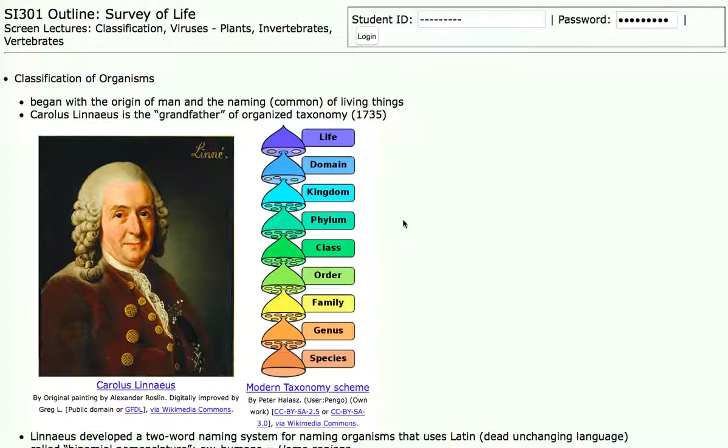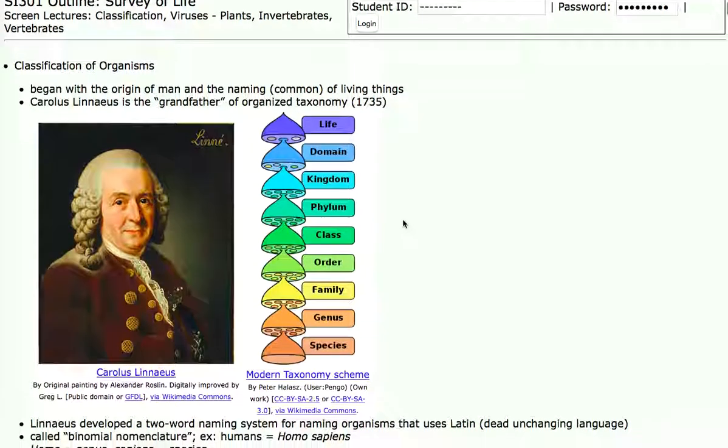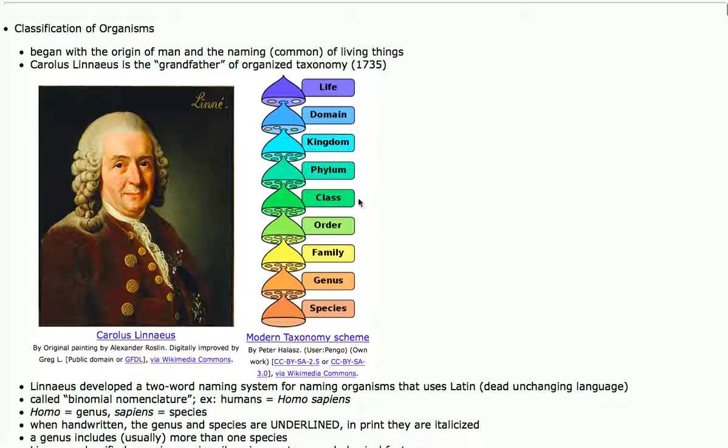We were in phylum Chordata. There are more than 15 different phyla of animals, but we are in phylum Chordata because at least at some point in our life we had what is called a notochord, a rod of cartilage in our back. We're in class Mammalia, which is distinct. We have fur and mammary glands, whereas other animals in phylum Chordata don't necessarily have that.